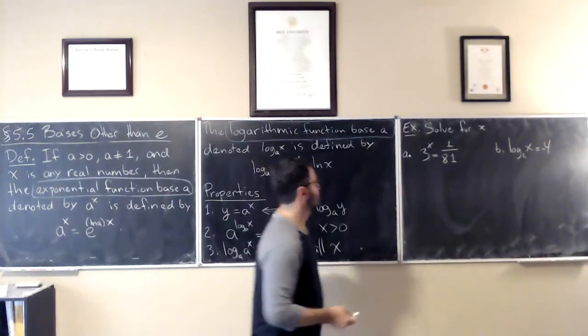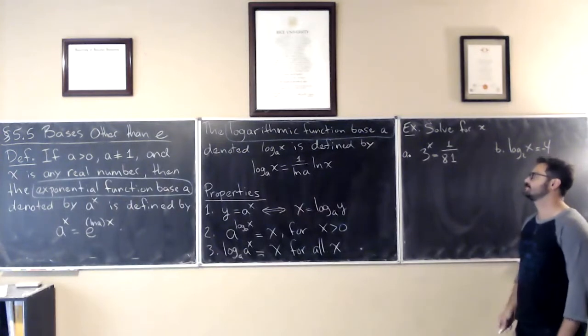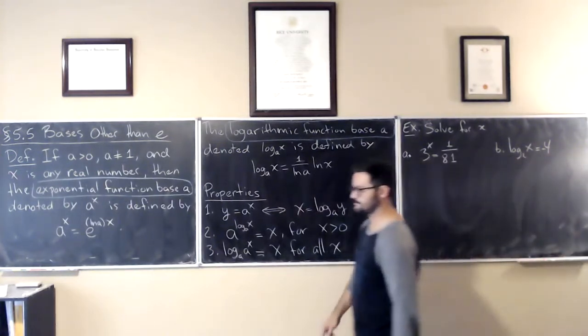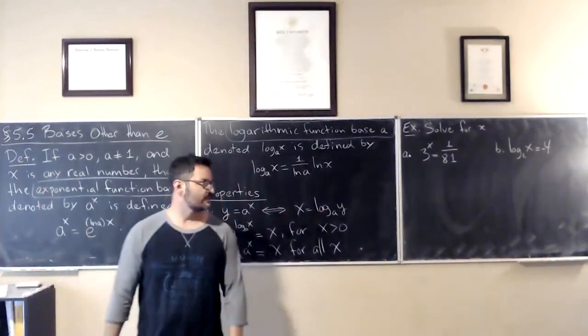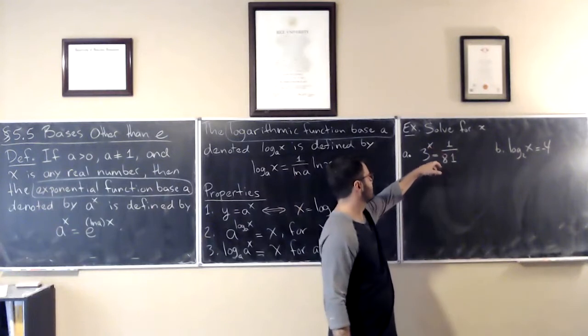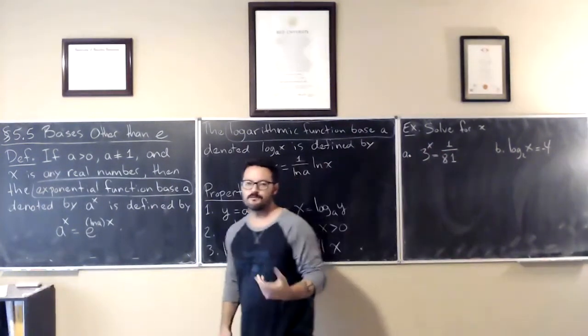So I said 3 times 3 is 9, times 3 is 27, times 3 is 81. So I can immediately say that x is equal to negative 4. If you plug in negative 4, you'll get 1 over 3 to the power of 4, which is equal to 1 over 81.